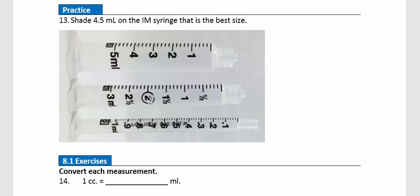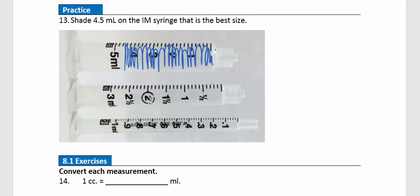Practice question 13: Shade 4.5 mL on the best-sized syringe. Only one syringe is large enough. Markings go by increments of 2, so we have 2, 4, 6, 8, 10. For 4.5, we shade halfway between 4 and 6. That concludes the video — you're now ready to answer all questions in the 8.1 exercises.